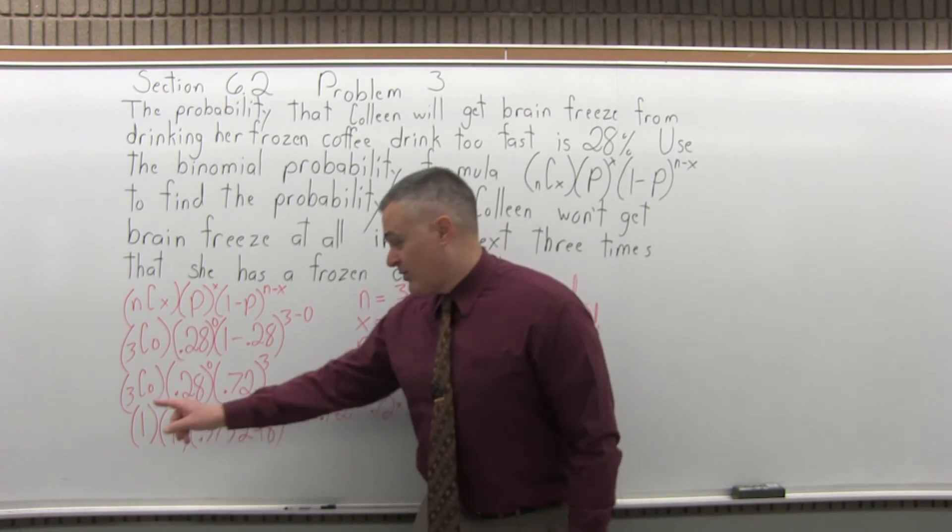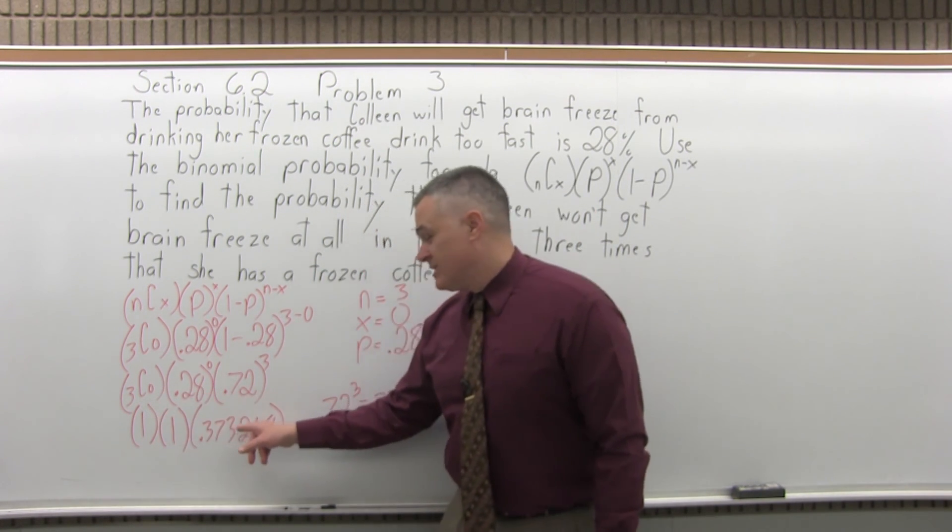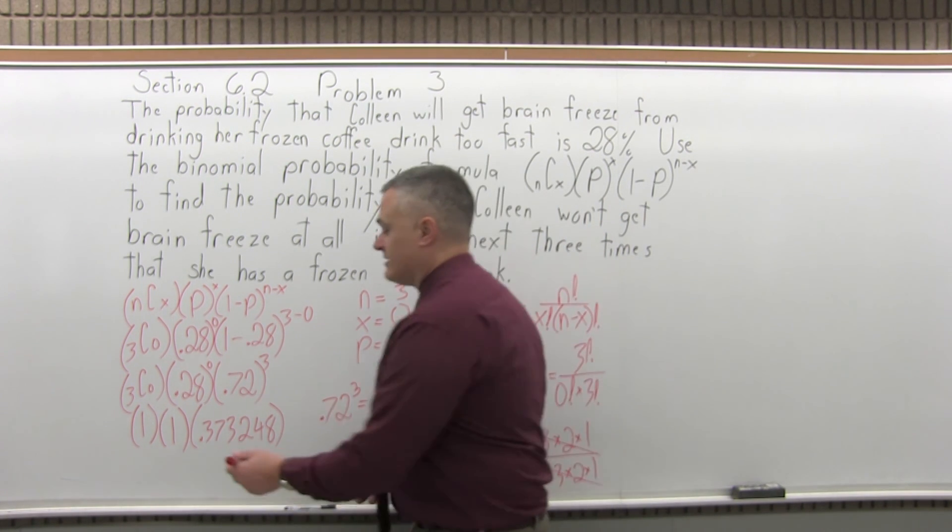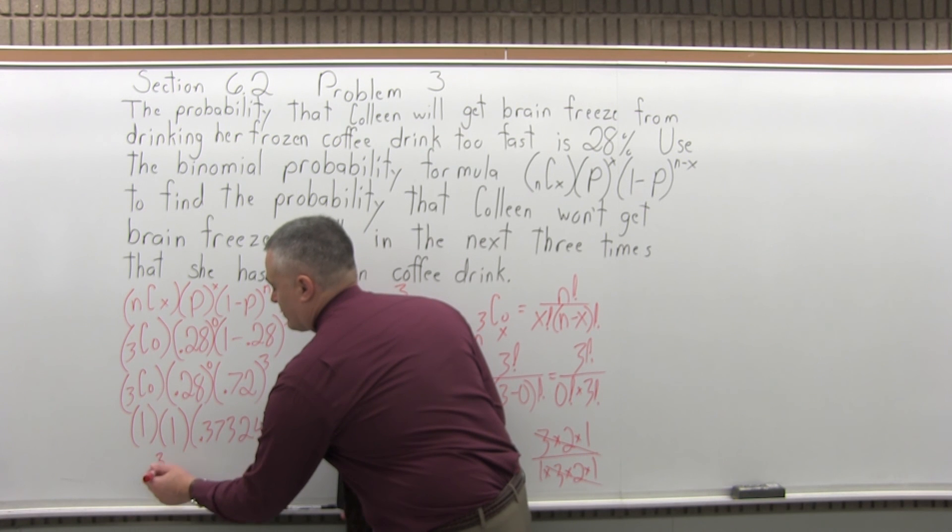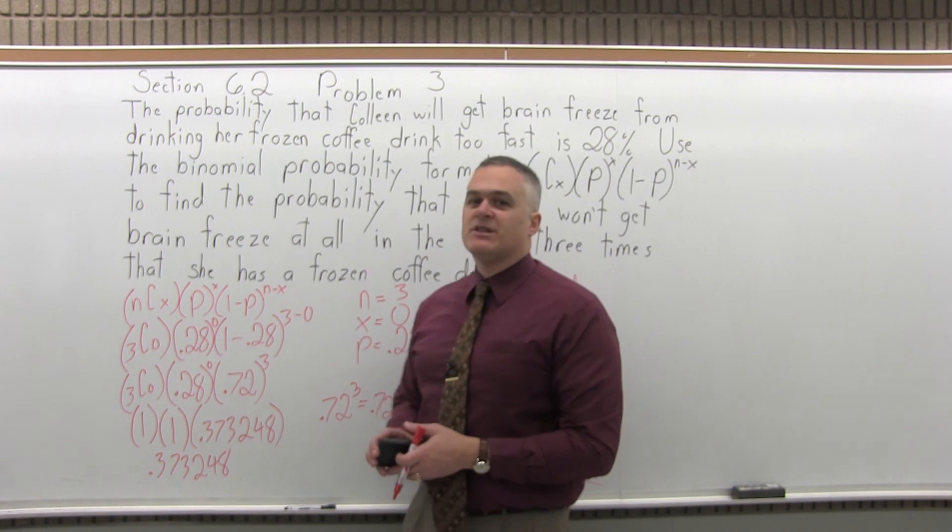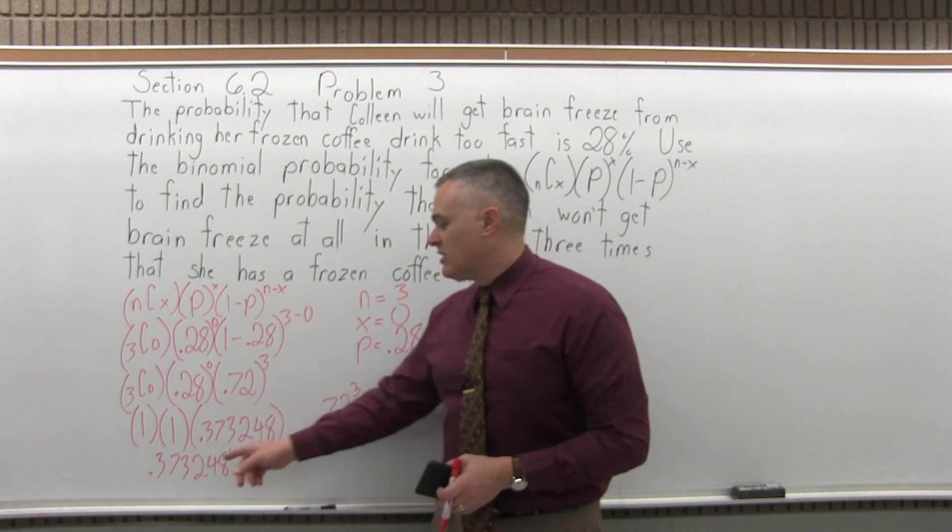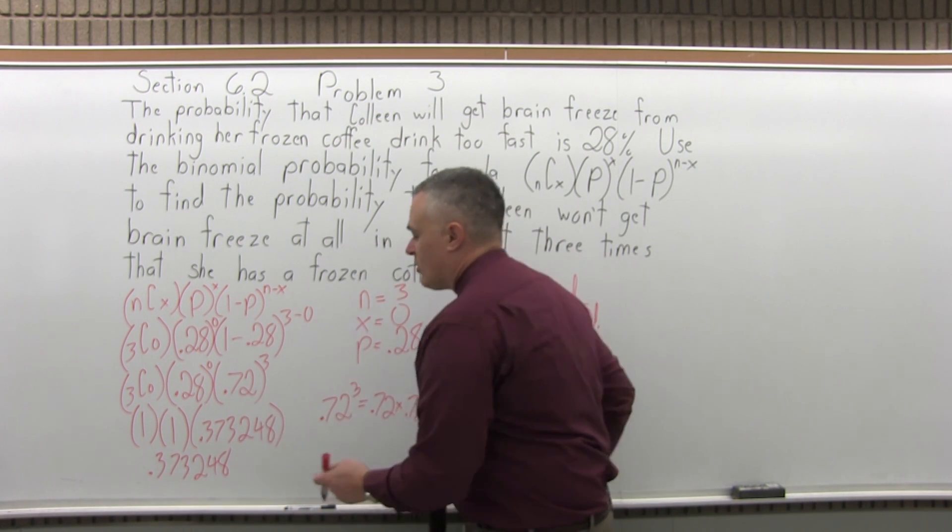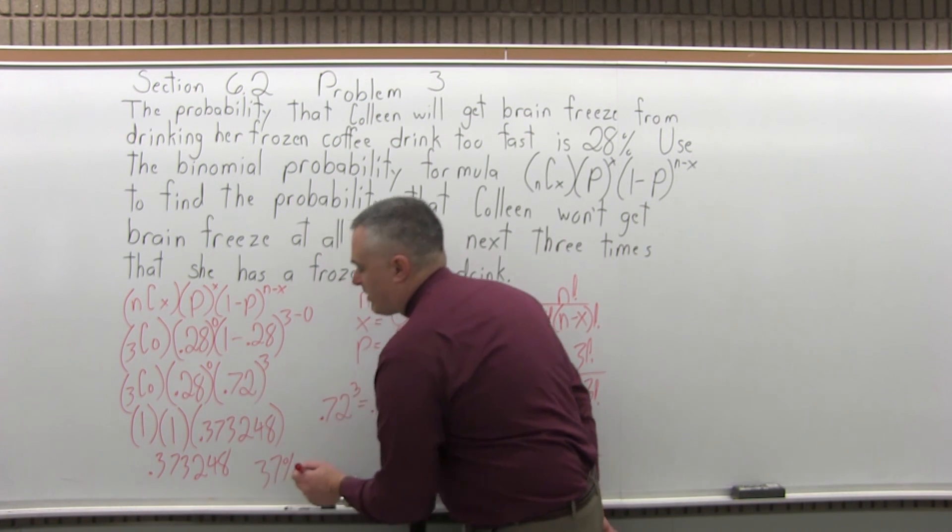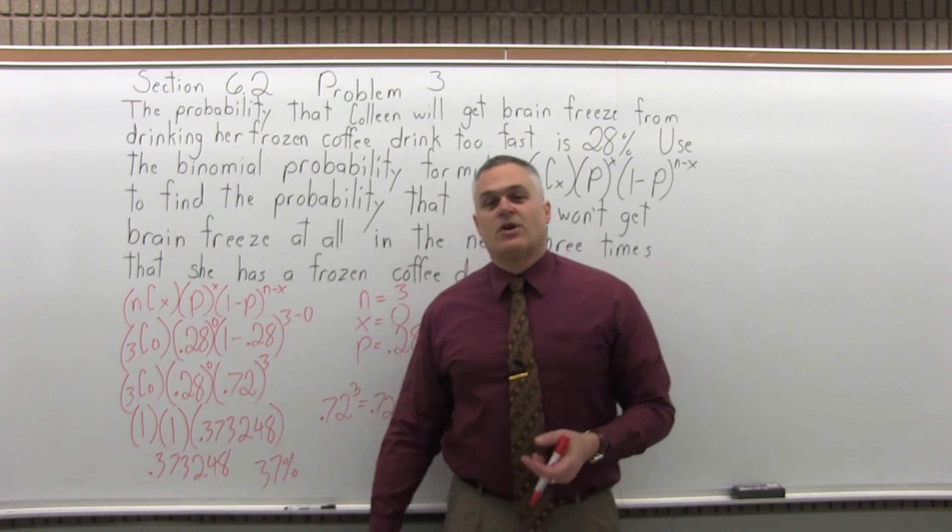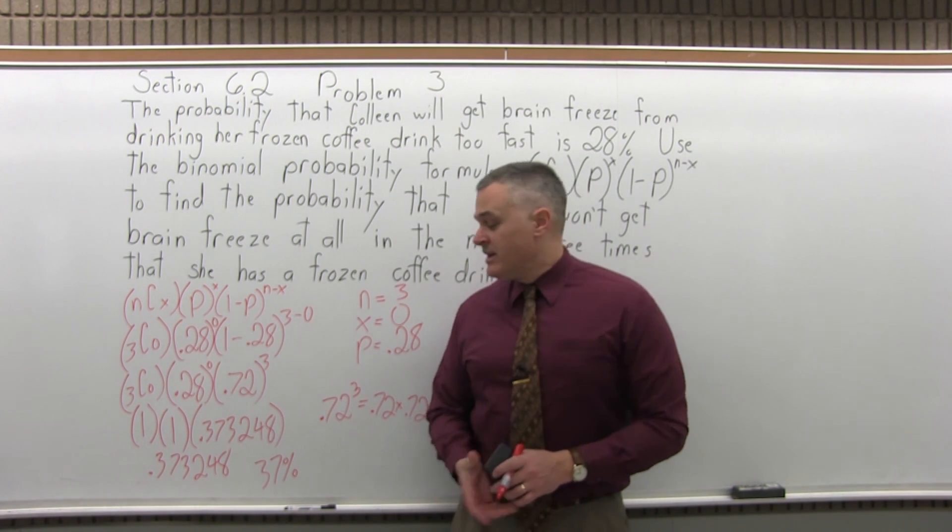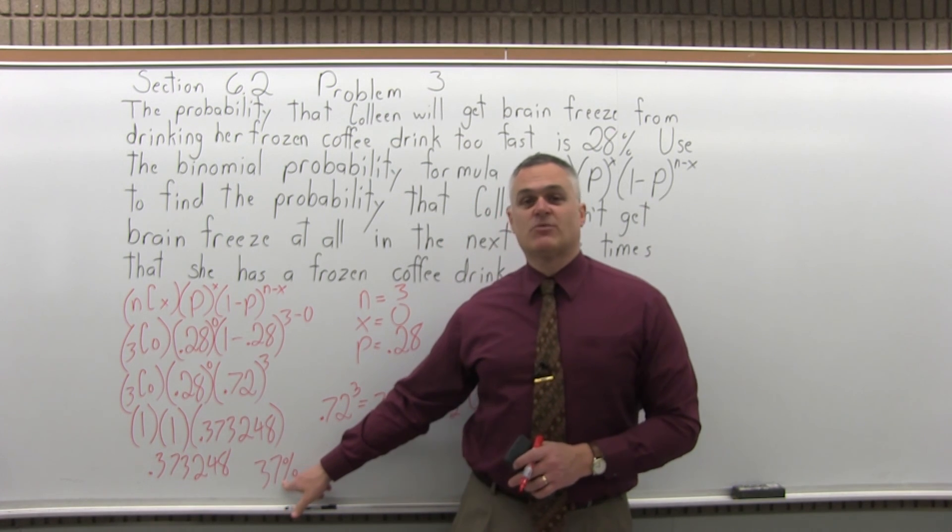So now I have to multiply 1 times 1 times 0.373248. Well, of course, the times 1 is easy. The final answer comes out to 0.373248. Now that's more places after the decimal than you really need. So you can just call it 0.373 if you like, or if you prefer percents, it's slightly more than a 37% probability. So the probability that Colleen will be able to drink her frozen coffee drink three times and not get brain freeze at all is slightly more than a 37% probability.